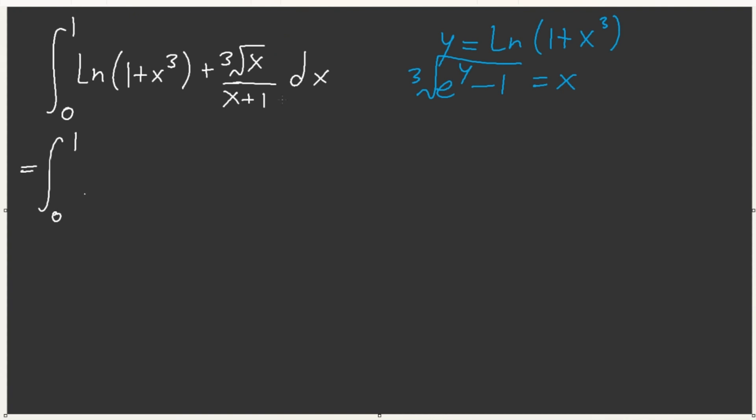So we have 0 to 1, ln 1 plus x cubed, and then we let x equal e to the u minus 1. If x was 1, then we need e to be ln of 2, so this needs to be ln of 2. Then we get e to the u minus 1 over e to the u with e to the u du. They cancel out. And then, plug in 0. If x is 0, then 1 equals e to the u, u must be 0.